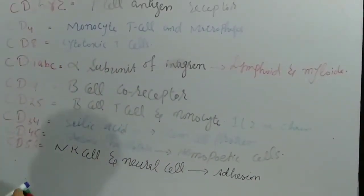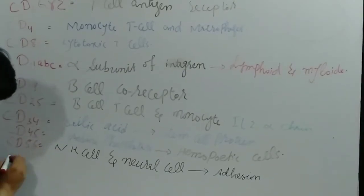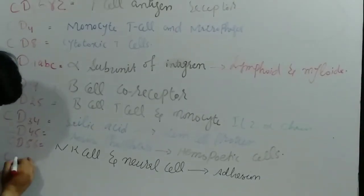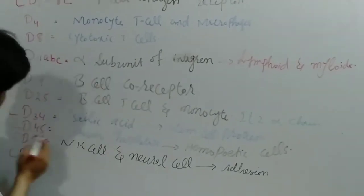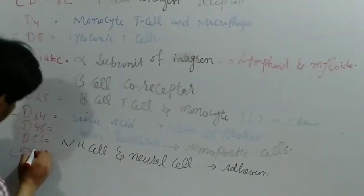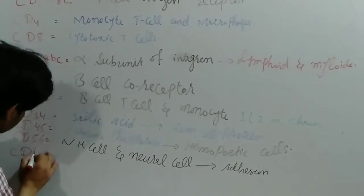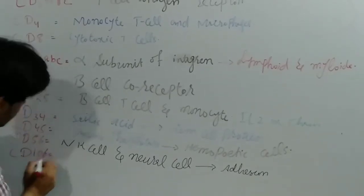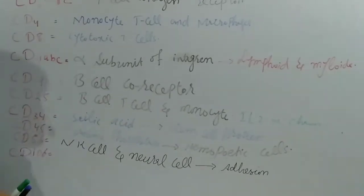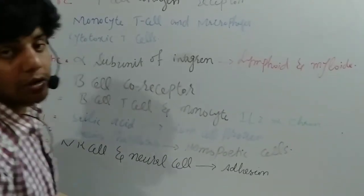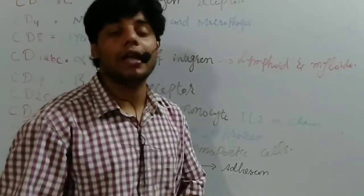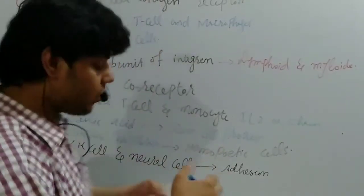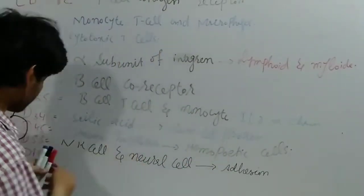Then we have CD106. CD106 is usually present on the endothelial cells of the vascular tissue.